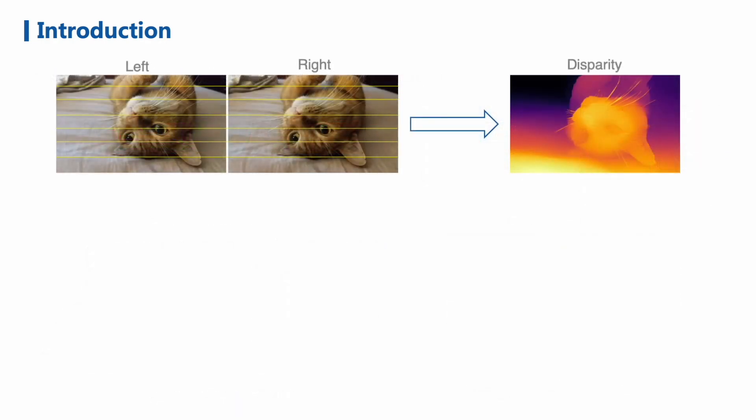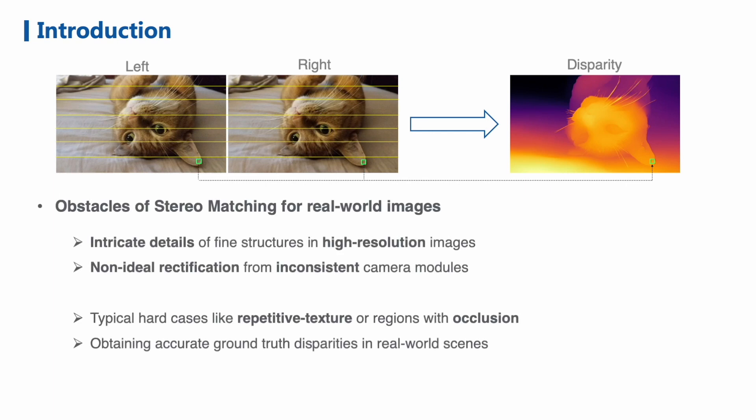The goal of stereo matching, given a pair of rectified images, is to compute the displacement between two corresponding pixels, namely disparity. To handle various scenes in everyday consumer photography, we are faced with some major obstacles.